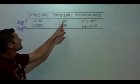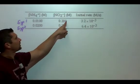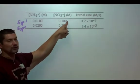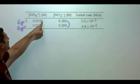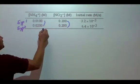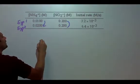Notice that the concentration of nitrite in experiments one and two stays the same. That's our control, right? So when this stays the same, what happens to the concentration of ammonium? It doubles.